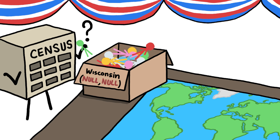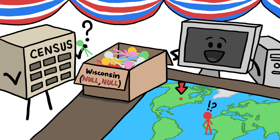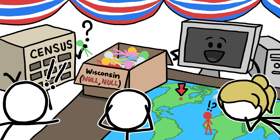More seriously, in a 2012 US election, many voters in Wisconsin lived in places that the Census Bureau didn't have coordinates for. So a new automatic system said they lived on Null Island, which is definitely not in any Wisconsin election district. If the mistake hadn't been caught in time, they might have had problems voting.